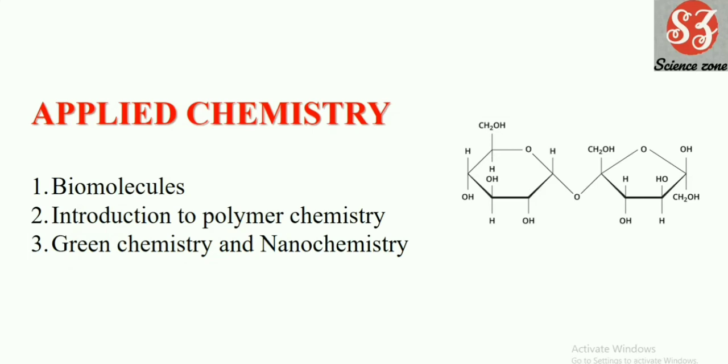Next is applied chemistry. So what is applied chemistry? The application of chemistry. Here we are going to cover three chapters: biomolecules, introduction to polymer chemistry, green chemistry and nano chemistry. What are biomolecules? The molecules found in nature - carbohydrates, amino acids, nucleic acids.